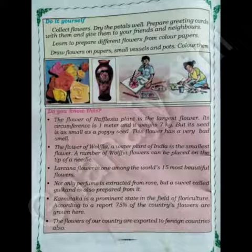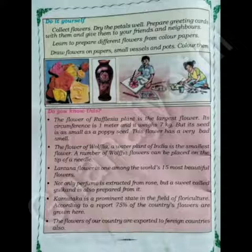Do you know this? The flower of the Rafflesia plant is the largest flower. Its circumference is a meter and it weighs 7 kg, but its seed is as small as a poppy seed. This flower has a very bad smell. The flower of Wolffia, the water plant of India, is the smallest flower. A number of Wolffia flowers can be placed on the tip of a needle.